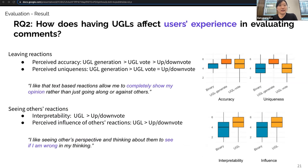To see how having UGLs affects users' experience, we analyzed post-survey questions on leaving reactions and seeing others' reactions. Regarding leaving reactions, we asked about perceived accuracy and perceived uniqueness. Generating a UGL gave the highest perceived accuracy, followed by voting on a UGL, then up-down voting. Perceived uniqueness was highest with generating UGLs, while there was no significant difference between voting on a UGL or up-down voting. Regarding seeing others' reactions, UGL participants gave higher scores to understanding others' opinions regarding comments, and also rated higher on how others' reactions affected their own evaluation.